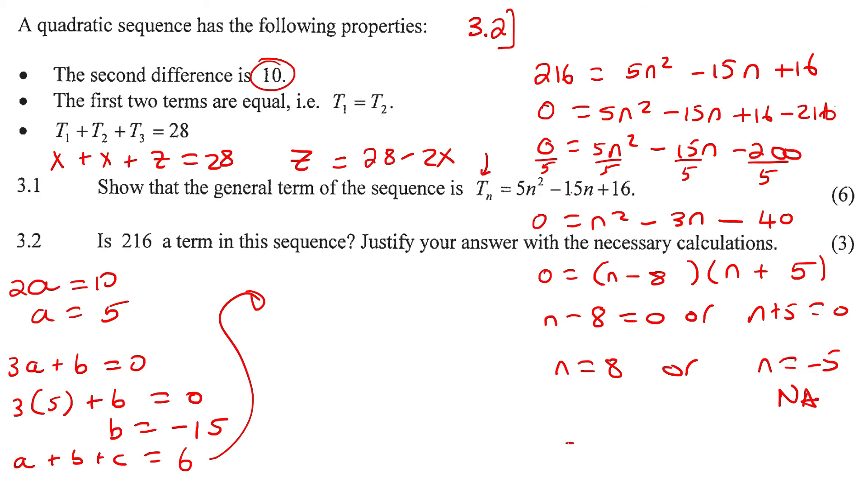What that means is that if we had to carry on with that sequence, you know we had 6, 6, 16, if you had to keep going and you get to position number 8, there would be the number 216 over there.